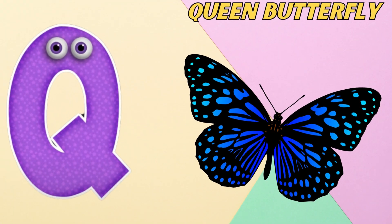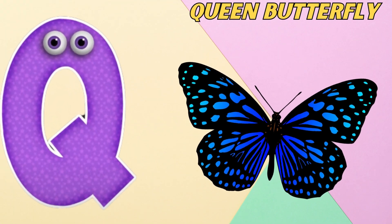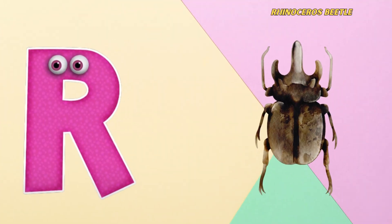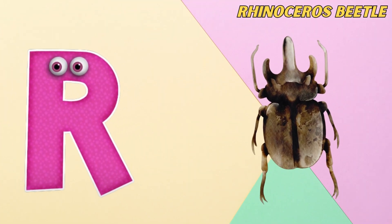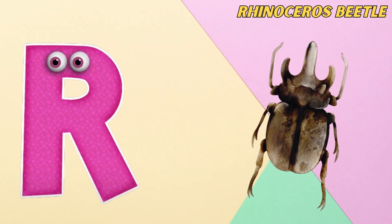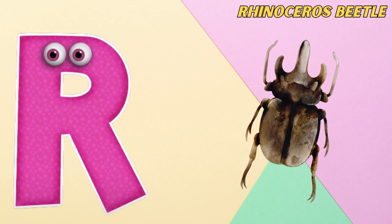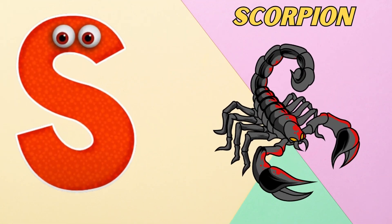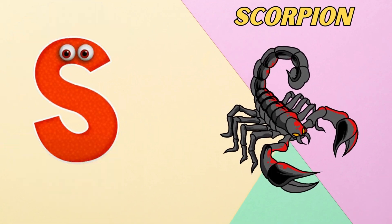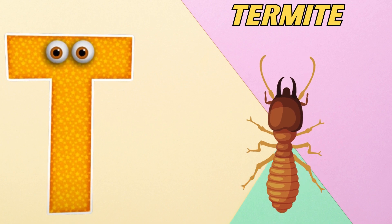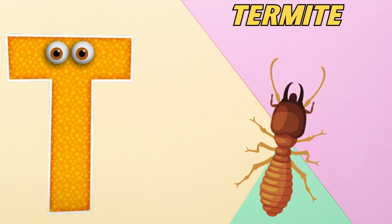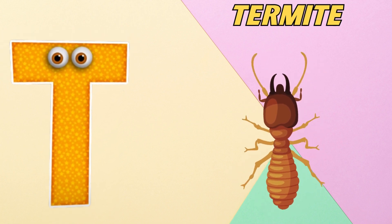Q is for queen butterfly. qu, qu, queen butterfly. R is for rhinoceros beetle. r, r, rhinoceros beetle. S is for scorpion. s, s, scorpion. T is for termite. t, t, termite.